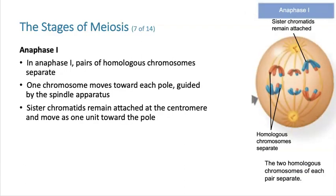In anaphase I, what we're having is the separation of homologous chromosomes. Notice that the sister chromatids are still attached to each other — non-sister chromatids are separating. The recombinant chromatids are separating while staying attached to their centromere. It's the homologous chromosomes that are separating in anaphase I.